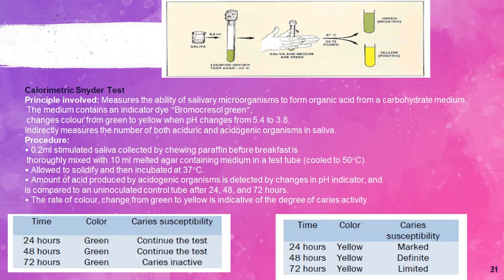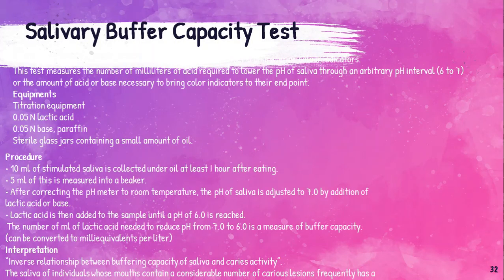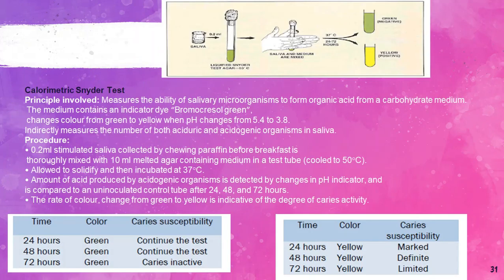The rate of color change from green to yellow is indicative of the degree of caries activity. When the indicator changes to yellow within 24 hours, caries susceptibility is marked. When the indicator changes to yellow within 48 hours, caries susceptibility is also marked. When the indicator changes to yellow in 72 hours, caries susceptibility is specified. When there is no color change even after 72 hours, the subject is said to be caries inactive.